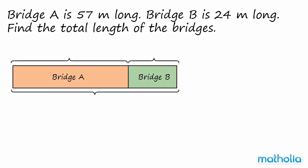Let's use a model to help us find the answer. We know that bridge A is 57 m long and we know that bridge B is 24 m long. To find the total length of the bridges we must add the lengths together.